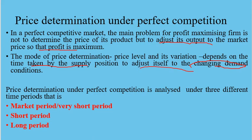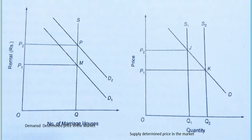Price and output determination under perfect competition can be analyzed into three heads: the market period or very short period, the short period, and the long period. In the market period, the total output of the product is fixed.